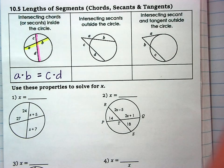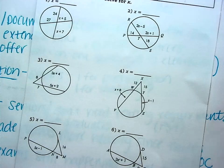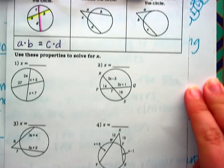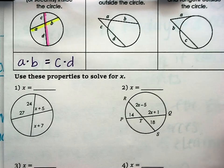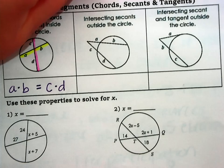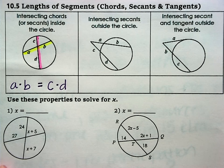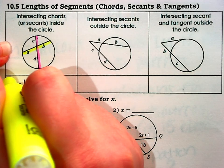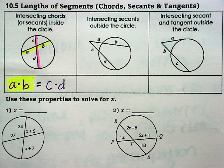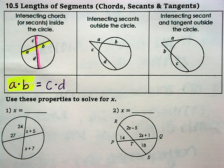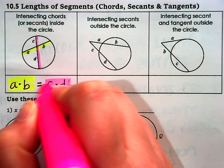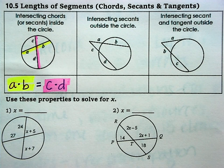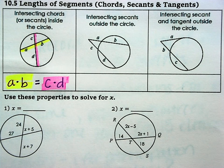You're going to take the pieces of the same segment and multiply them together. So we have the yellow parts A and B multiplied together equals the pink parts C times D.